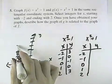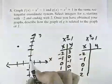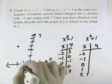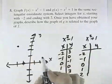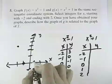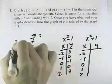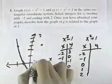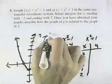2 squared is 4, minus 1 is 3. So we have (-2, 3), (-1, 0), (0, -1), (1, 0), and (2, 3) for our graph of f.